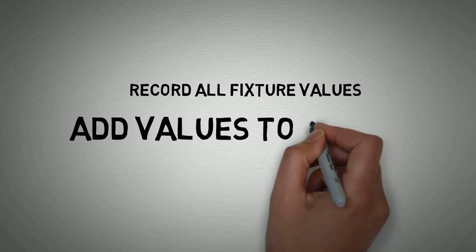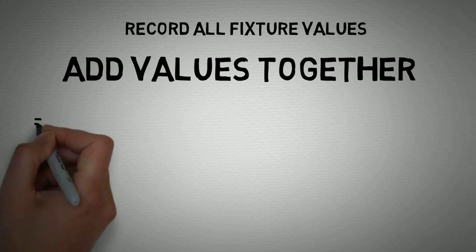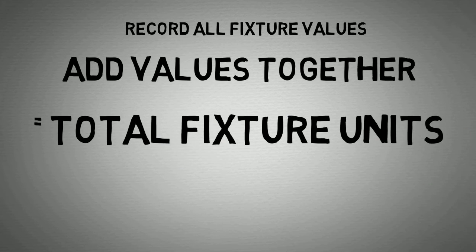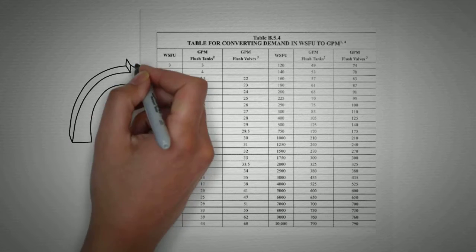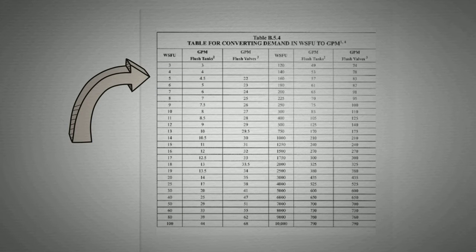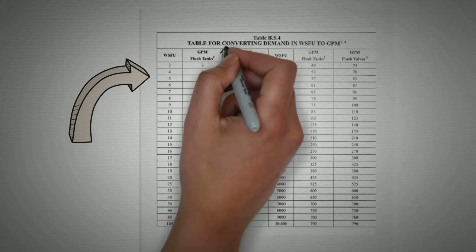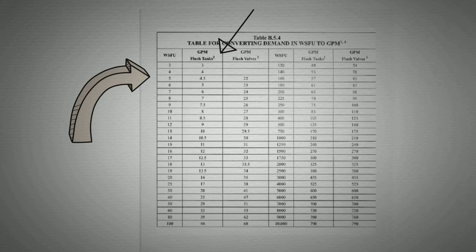Add the values together and round to the nearest whole number to obtain total fixture units. Finally, refer to the NSPC's Table for Converting Demand in WSFU to GPM chart and simply match the total number of water supply fixture units to the given value in GPM.